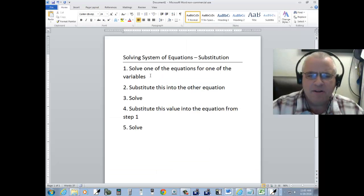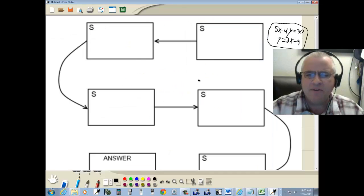Okay. Step one. Solve one of the equations for one of the variables. So solve. Doesn't matter which one you pick. I'll pick the second equation. We've got y is equal to 2x minus 9. Solve one of the equations for one of the variables.